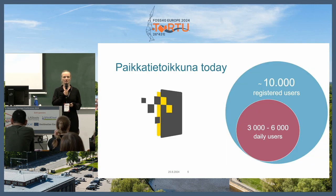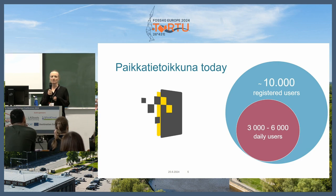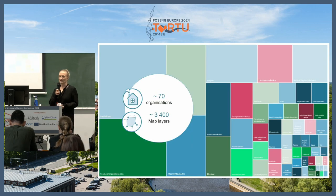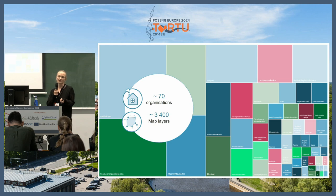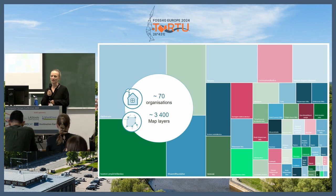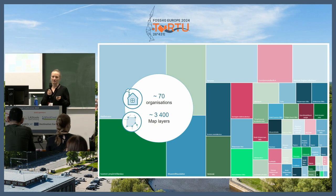We have around 10,000 registered users. Registered users have some extra rights to, for example, create their own data or publish embedded maps, but a guest user can also view all the data that is already there. We have about 3,000 to 6,000 users daily, and that's nearly 2 million visits a year. There are around 70 different organizations — data producers — that bring data into the geo-portal, and together they have around 3,400 map layers.